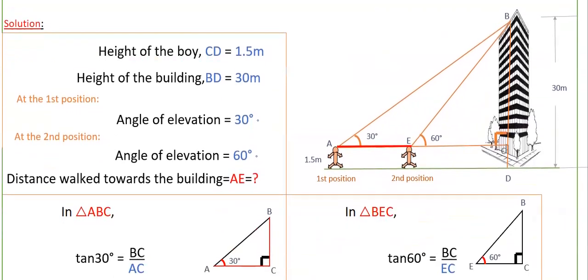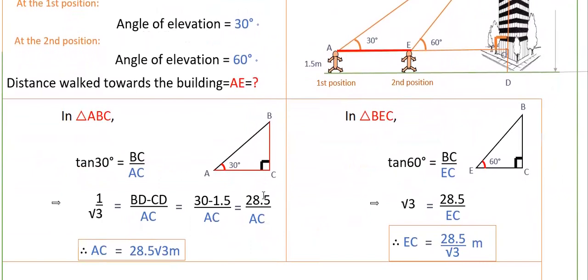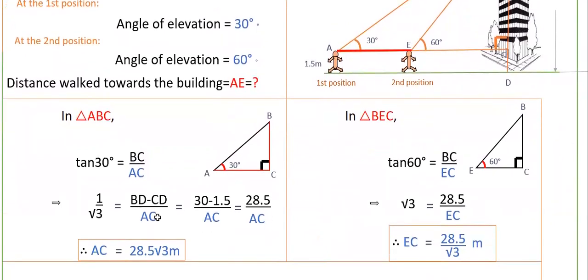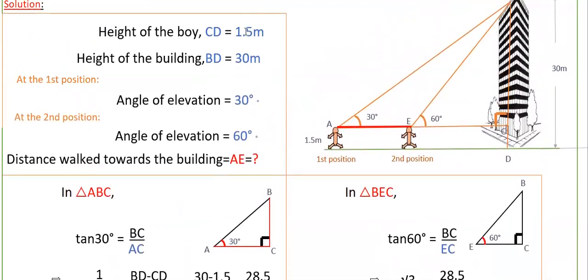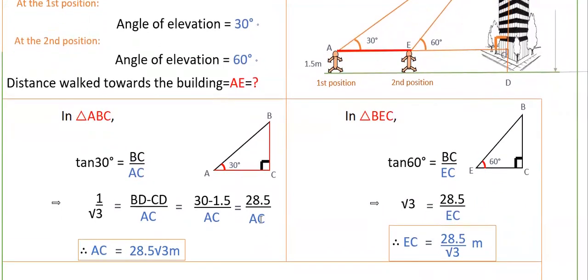In the first triangle ABC, the angle is 30 degrees. So tan 30 degrees equals BC by AC — opposite side by adjacent side. Tan 30 is 1 by root 3, and BC equals BD minus CD. BD is 30 meters and CD is 1.5, so BC equals 30 minus 1.5, which is 28.5 meters. Therefore 1 by root 3 equals 28.5 by AC, giving AC equals 28.5 root 3 meters.